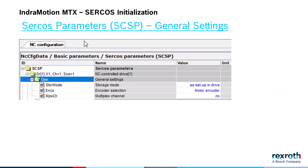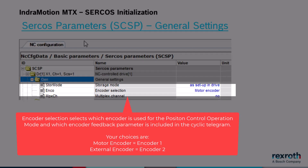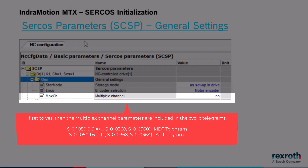In the parameters for general settings, you need to set values for storage mode, encoder selection, and multiplex channel. The value for storage mode gets written to drive parameter S169. The storage mode parameter determines whether any changes in drive parameters get saved to the flash memory of the drive. The value for encoder selection selects which encoder is used for the position control operation mode and which encoder feedback parameter is included in the cyclic telegram — either the motor encoder or the external encoder. The value for multiplex channel determines whether the parameters for the multiplex channel are included in the cyclic telegrams.